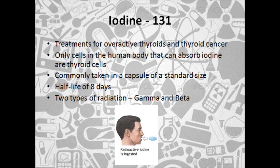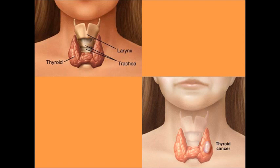Iodine-131 is commonly taken in a capsule of a standard size but can also be taken in the form of a drink. Iodine-131 has a half-life of 8 days. There are two types of radiation released from iodine-131: gamma radiation and beta radiation. The beta radiation can only travel a few millimetres out of the patient's body, enabling it to selectively kill the most overactive thyroid cells. The gamma radiation will have died off and be insignificant after around 3 days.